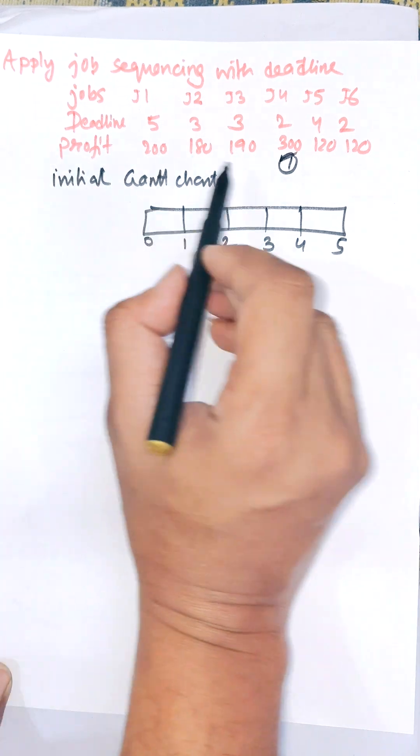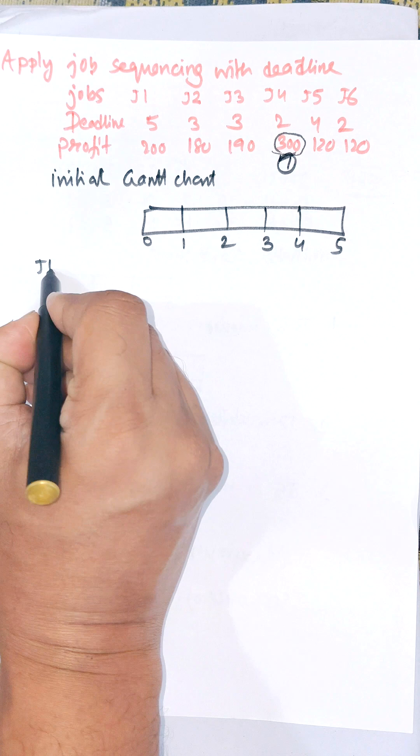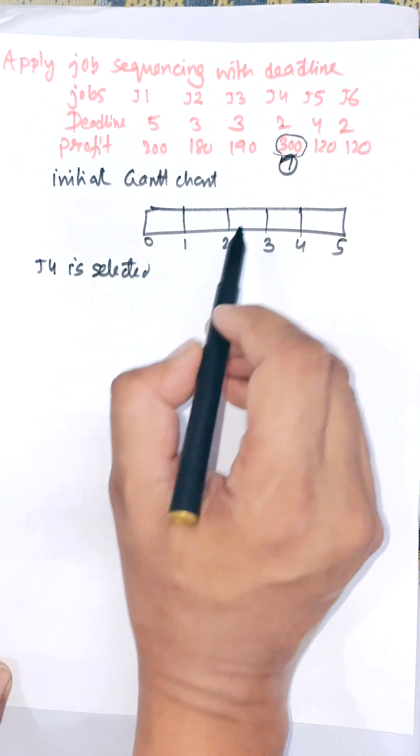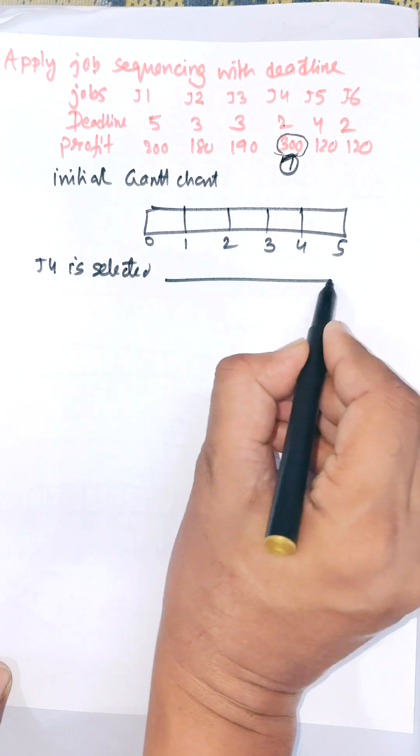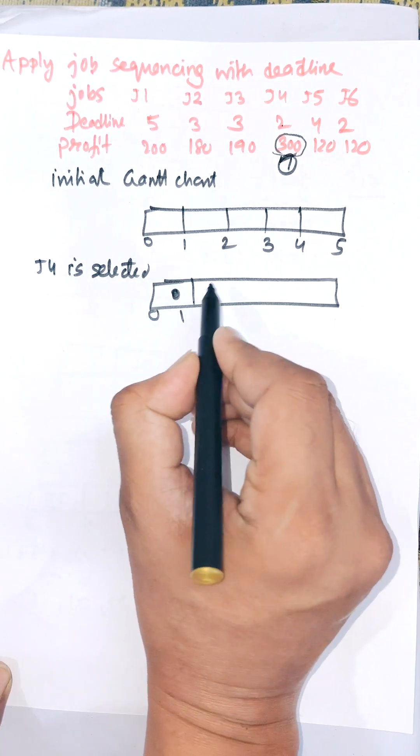J4 is selected, deadline for J4 is 2, so we will select J4 in between 1 and 2. So first 0 to 1, 1 to 2 - J4 is selected in between 1 to 2.